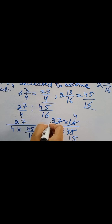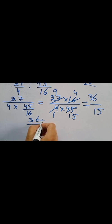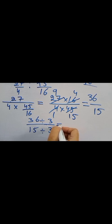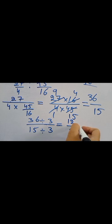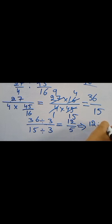We write it as 27, using the 3 times table — 9 threes are 27 — giving us 36 over 15. Next we cancel 36 over 15 by dividing 3 from both numbers. We have 12 over 5, and that gives us 12 ratio 5. That is our answer.